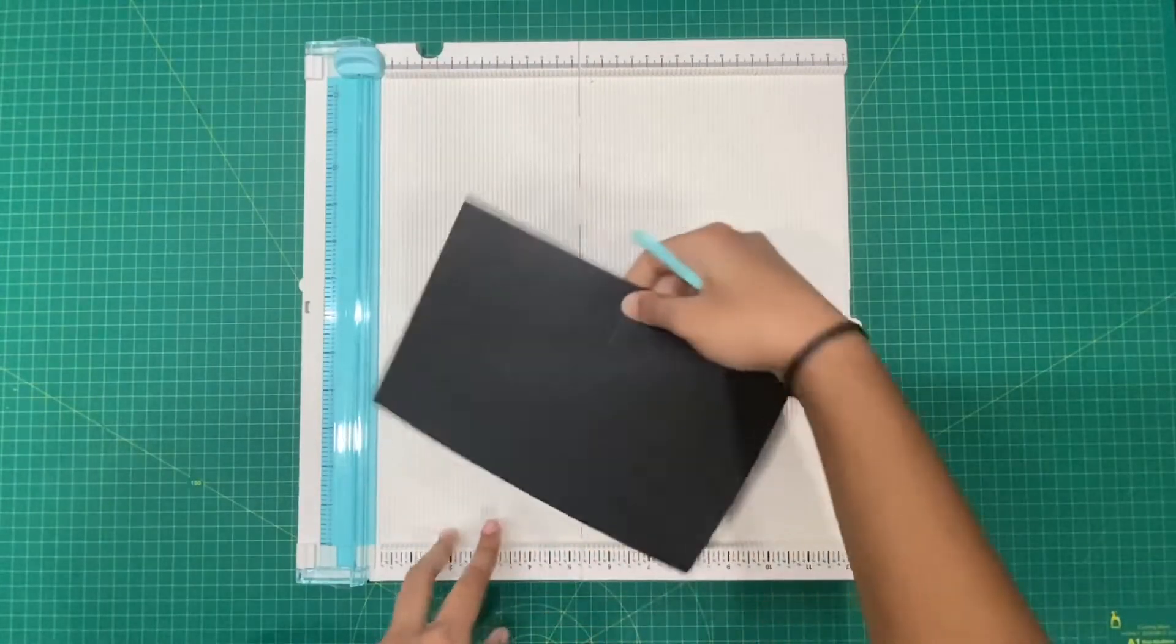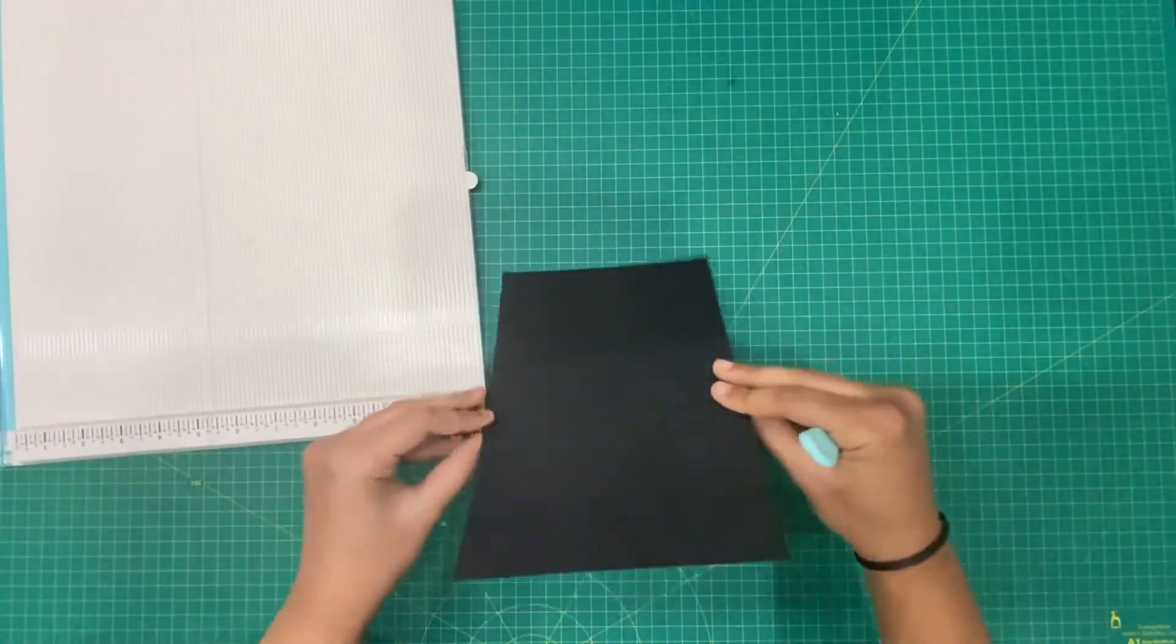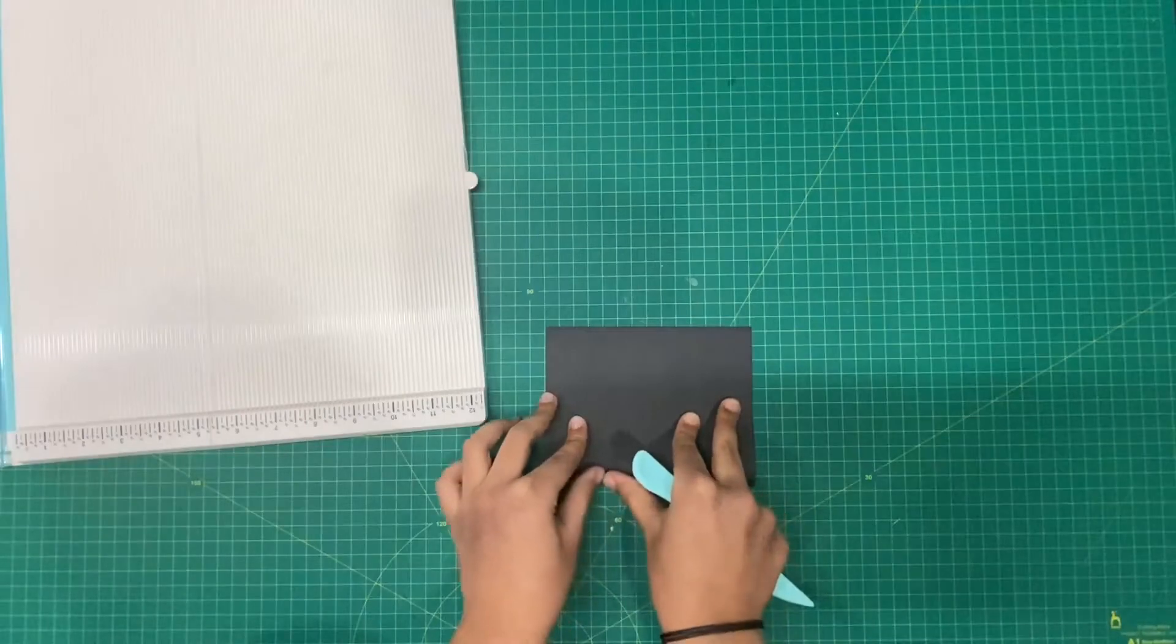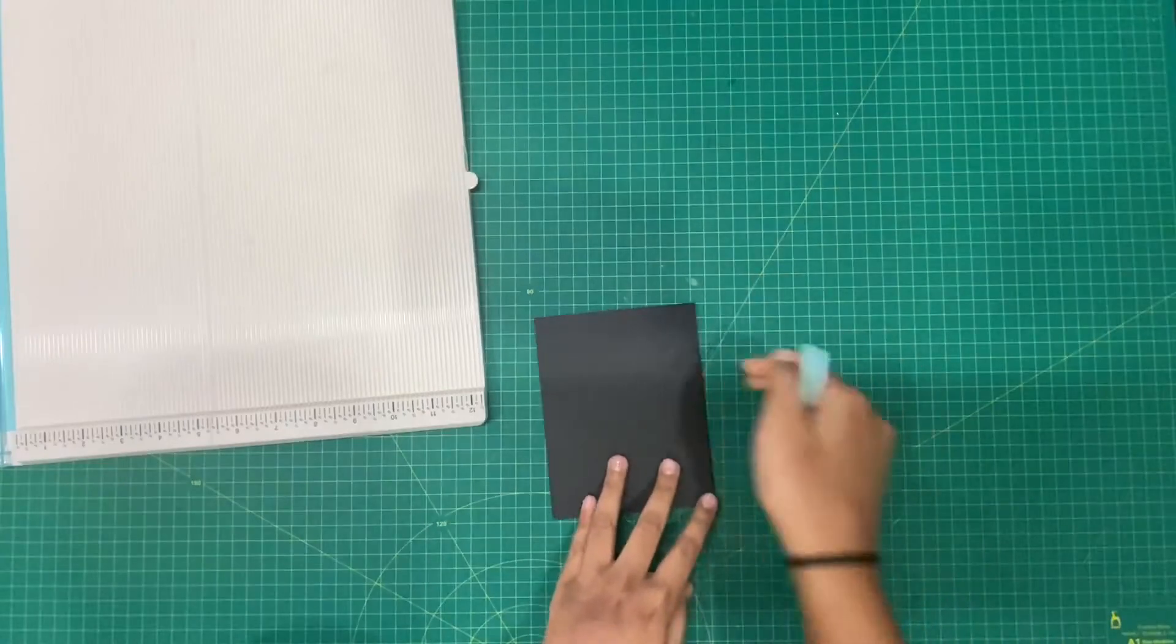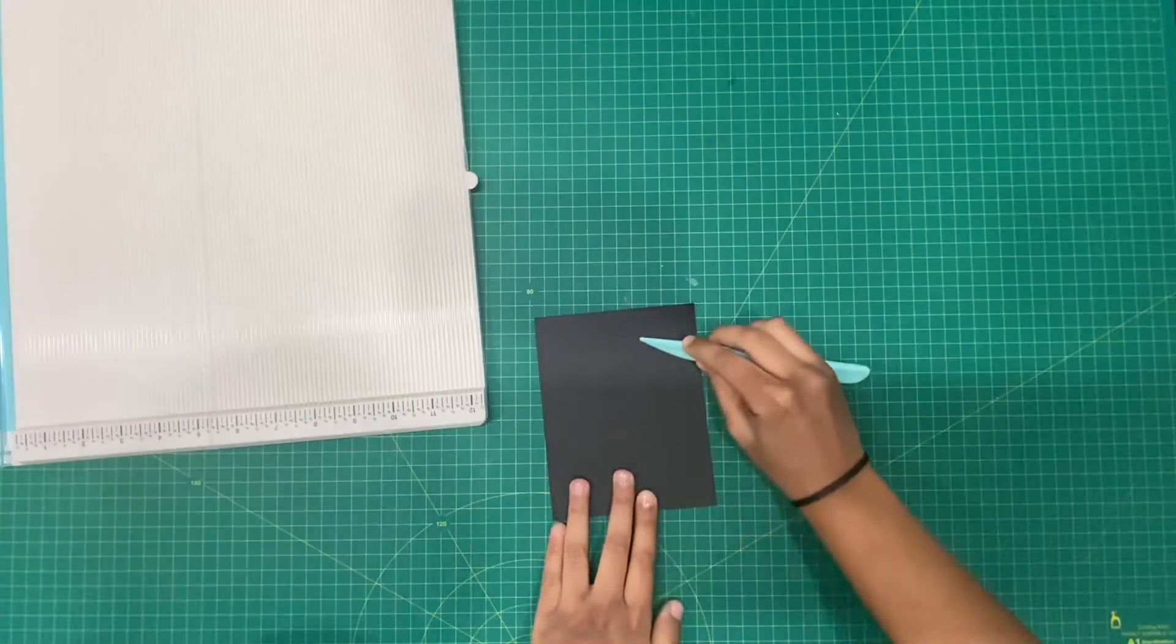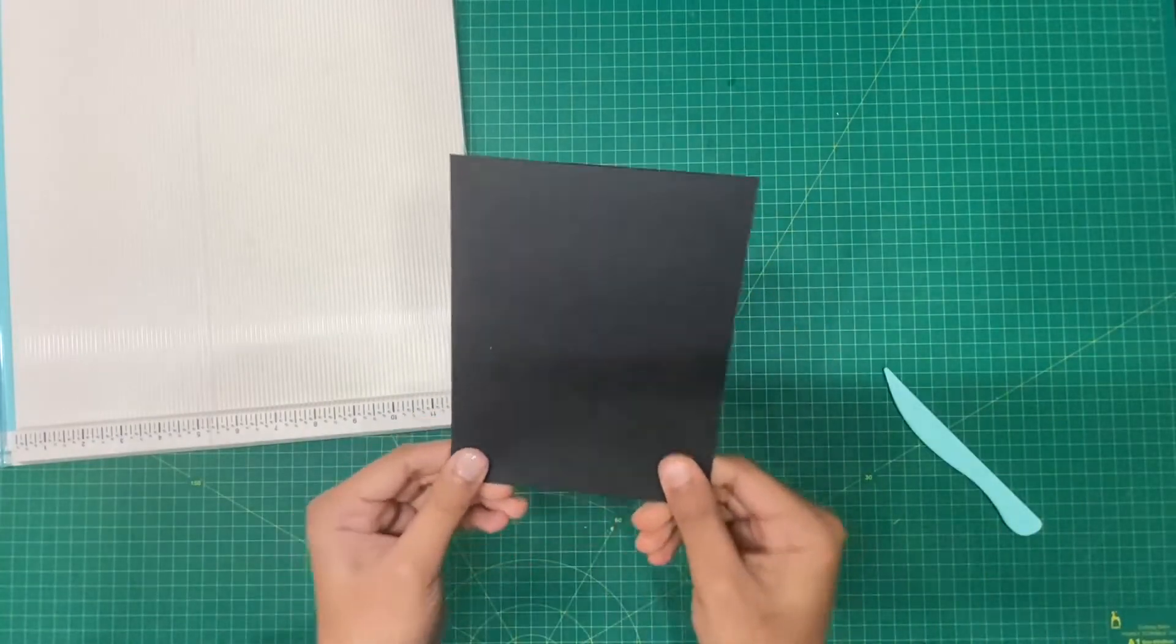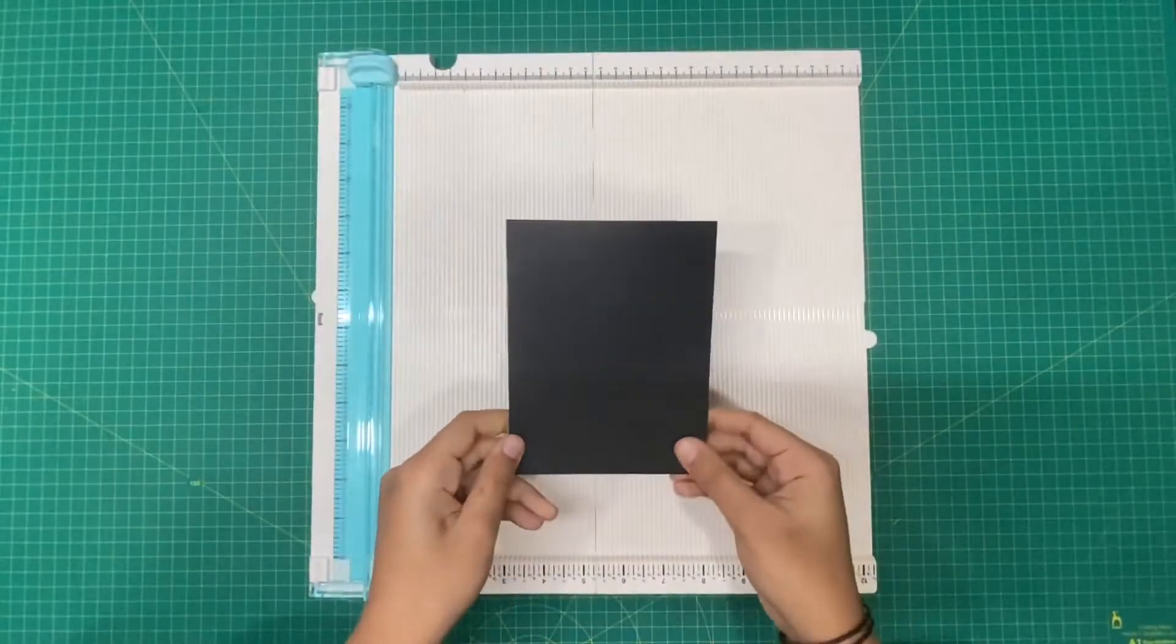Once you score the line you can take your cardstock and fold it. I'm going to make a nice crease using my bone folder. Now we have ready to size side fold cardstock for our base. We can put our base card away for now.